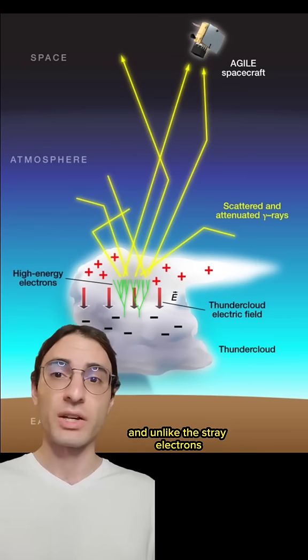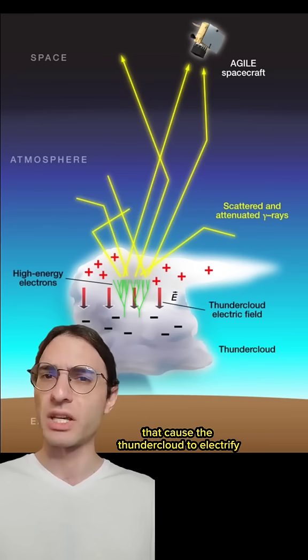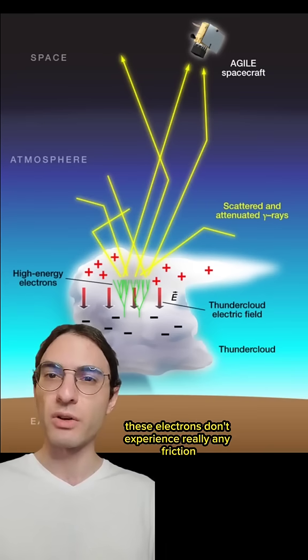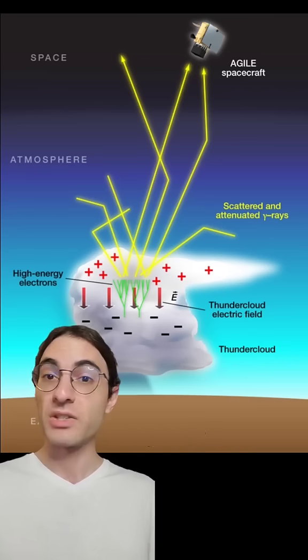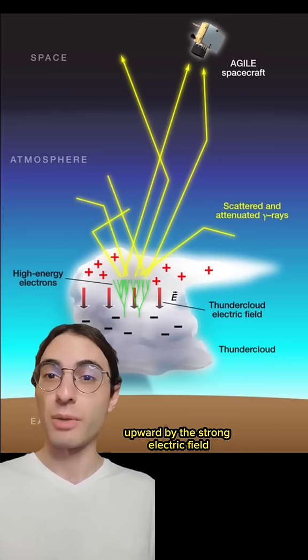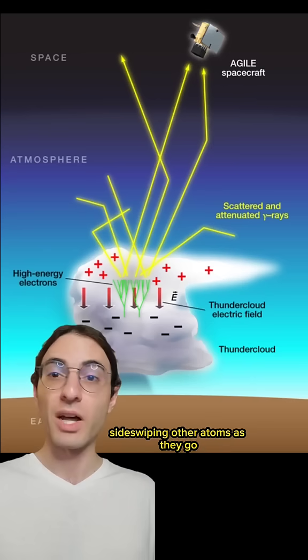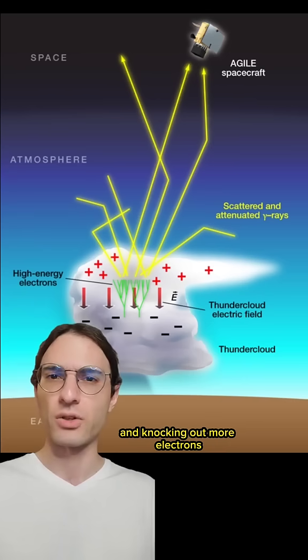And unlike the stray electrons that cause the thundercloud to electrify to begin with, these electrons don't experience any friction. They're just moving too fast. So instead, they're accelerated upward by the strong electric field, side-swiping other atoms as they go and knocking out more electrons.